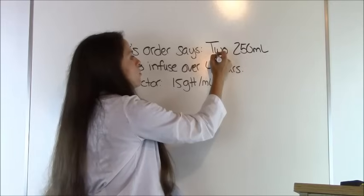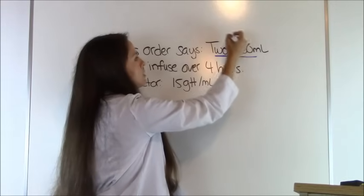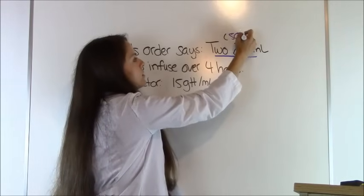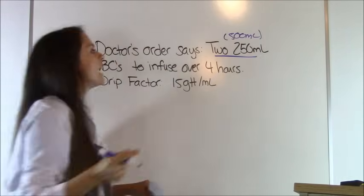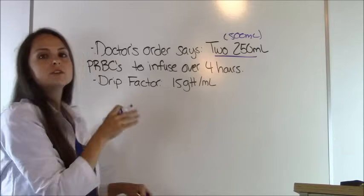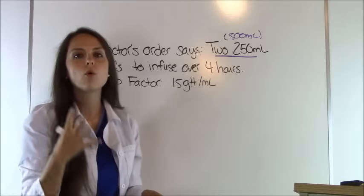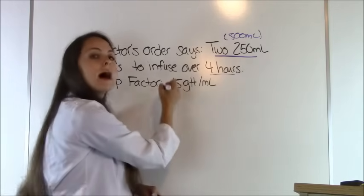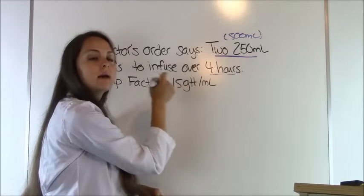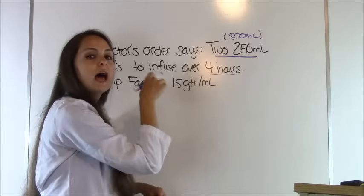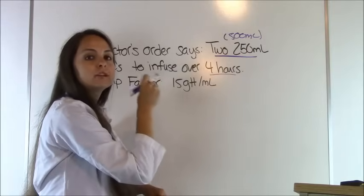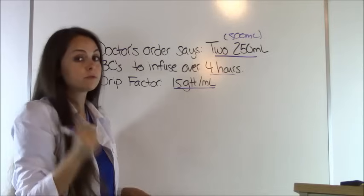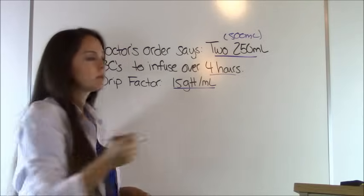We'll write 500 milliliters because that's what we're working with. We're going to infuse that over 4 hours with a drip factor of 15 drops per milliliter, and we're trying to get to drops per minute — that is our goal.